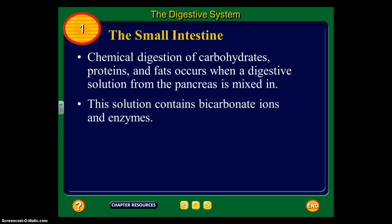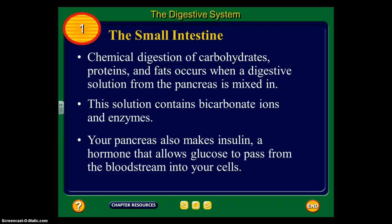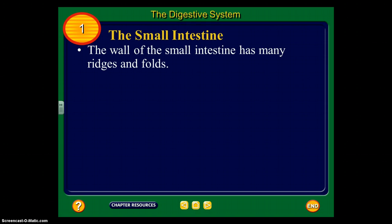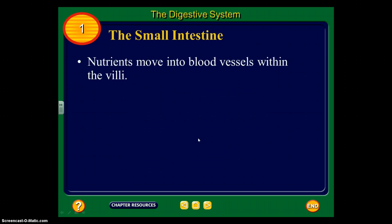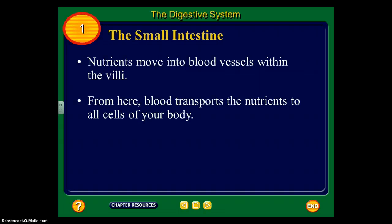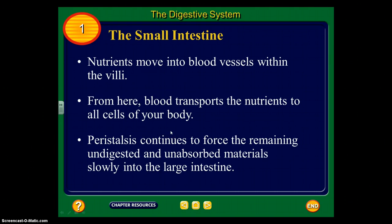Chemical digestion of carbohydrates, proteins, and fats occurs as digestive solution from the pancreas is mixed in. This solution contains bicarbonate ions and enzymes. The pancreas also makes insulin, a hormone that allows glucose to pass from the bloodstream into your cells. The wall of the small intestine has many ridges and folds covered with finger-like projections called villi. Inside the villi there are lymph vessels and capillaries — nutrients move into the blood vessels within the villi, and the blood transports those nutrients to all cells of your body.